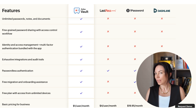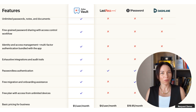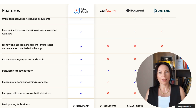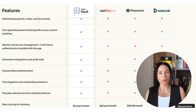Let's compare secure password management solutions: Zoho Vault, LastPass, 1Password, and Dashlane. Zoho Vault stands out by offering unlimited passwords, notes, and documents — a feature missing from all three competitors. It also includes fine-grained password sharing with access control workflows and bundles identity and access management plus multi-factor authentication at no extra cost, something none of the others provide.